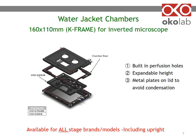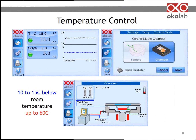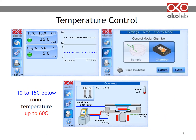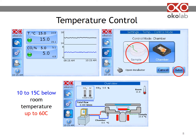The height of the chamber can be expanded using multiple chamber risers. On the lid, a suitable metal plate avoids condensation. Temperature is set using a touchscreen interface. You can operate the system in chamber feedback mode, or you can place the provided temperature probe in a reference well and set operating in sample feedback mode.